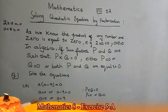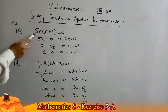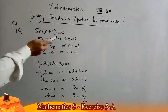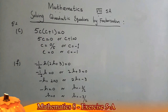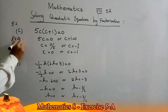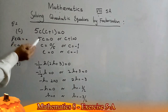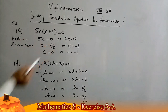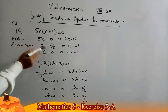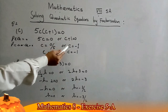Question 1, Part (c): 5c(c + 1) = 0. Solve means we have to find the value of c. Using the principle p × q = 0, either 5c = 0 or c + 1 = 0. So c = 0/5, which gives c = 0, or c = −1. That is the solution of the given equation.